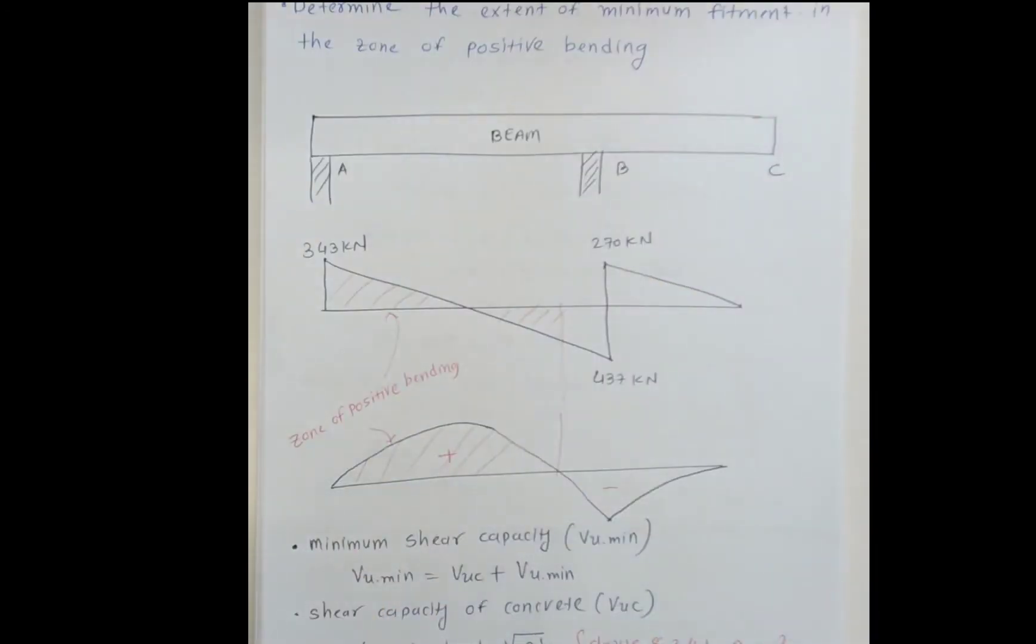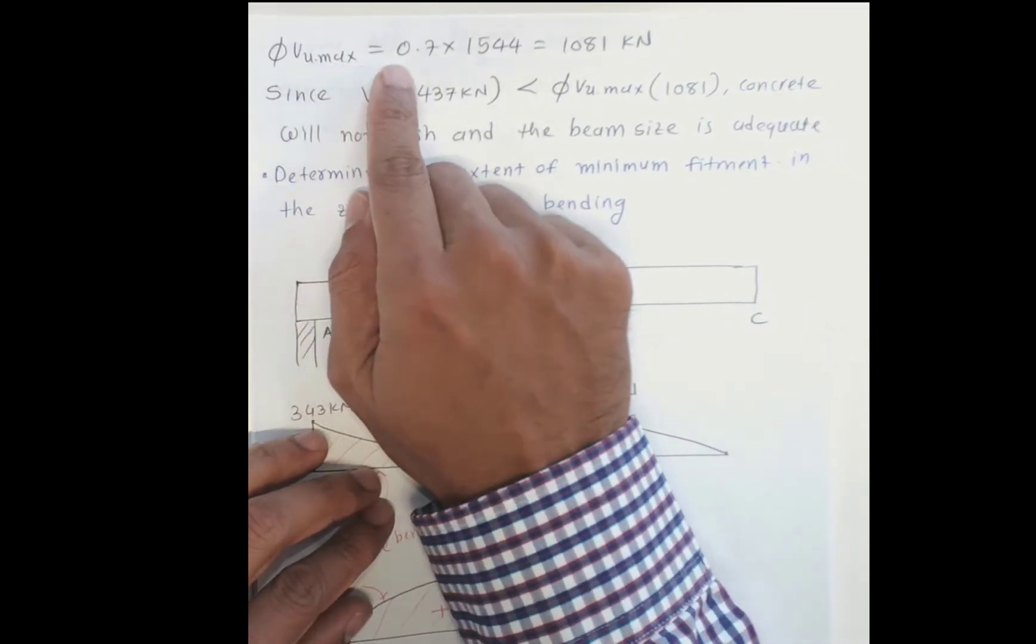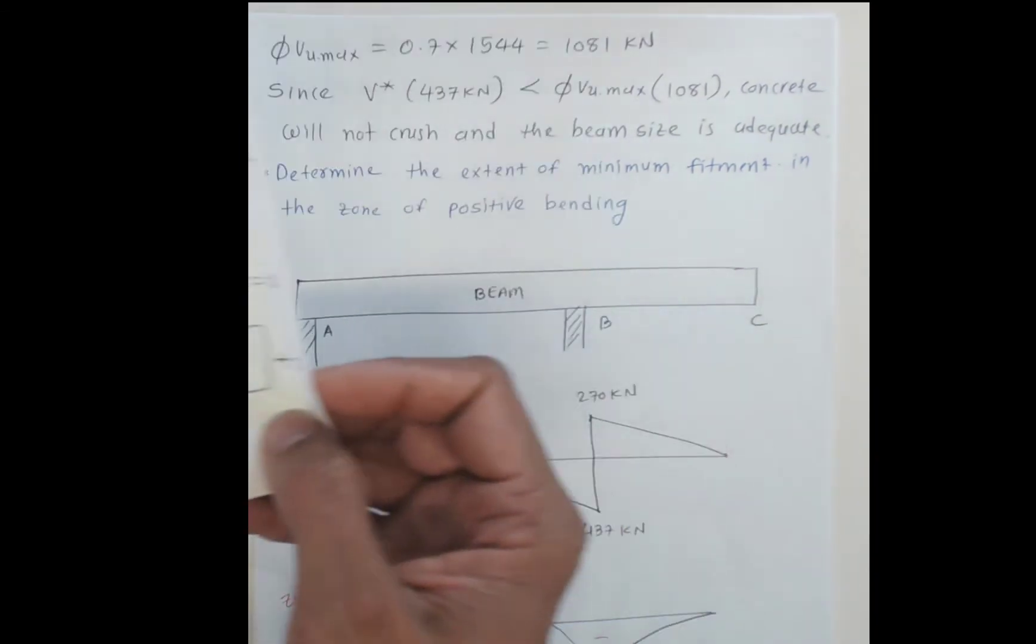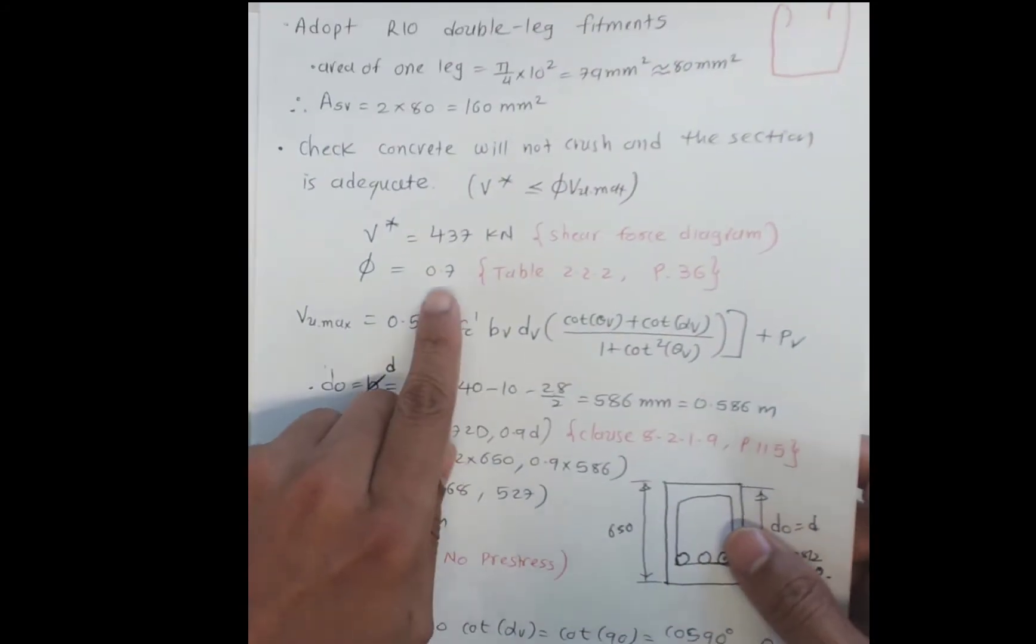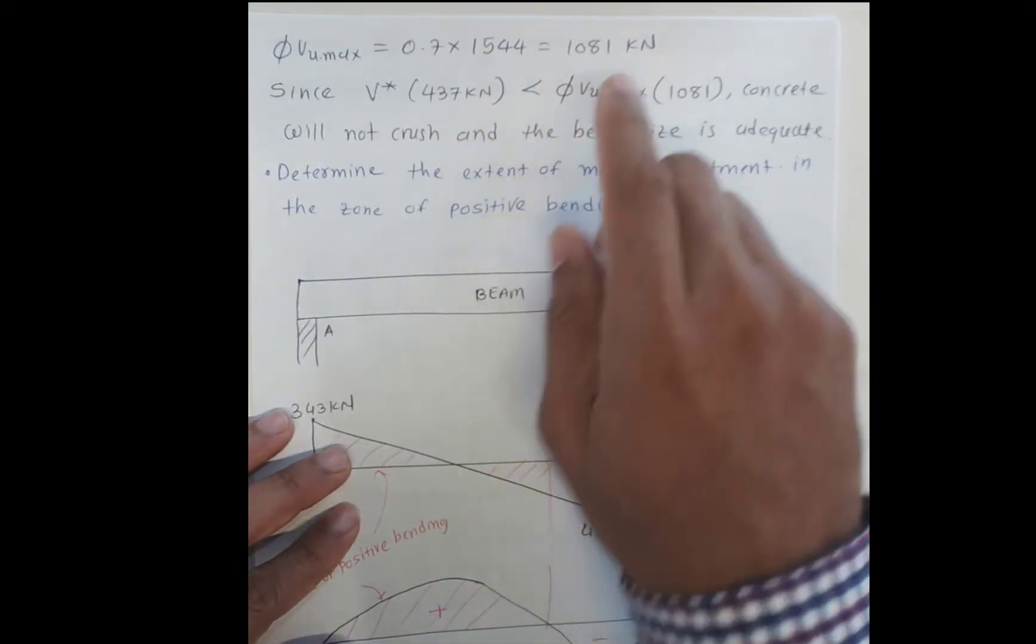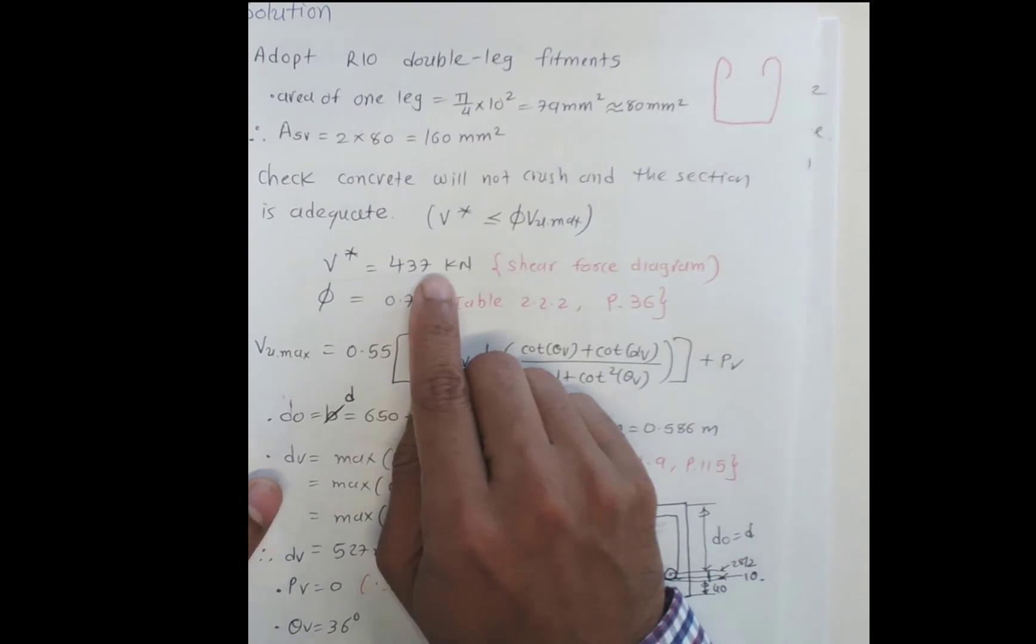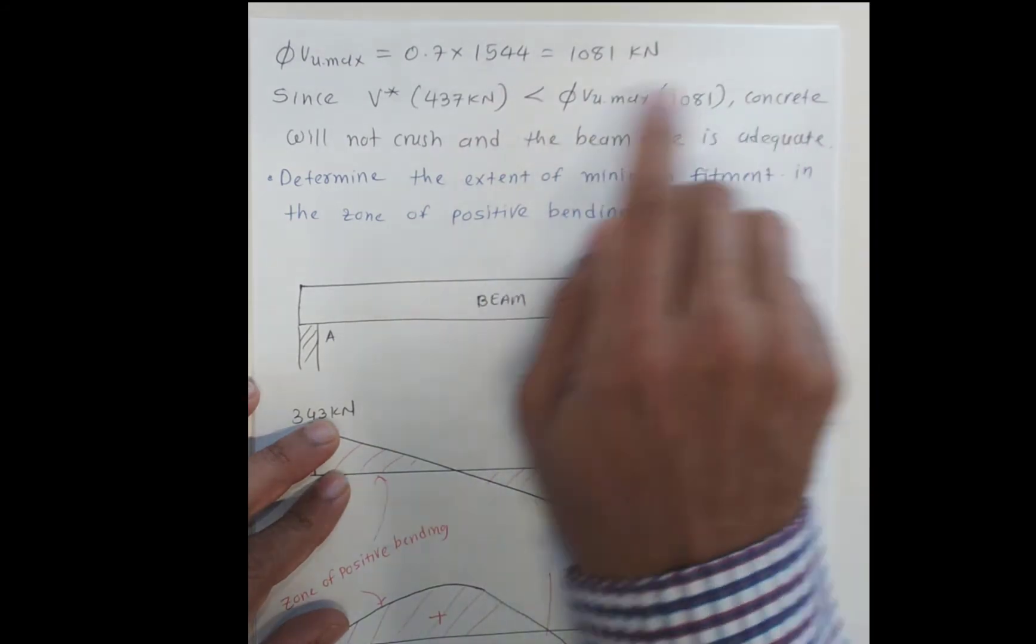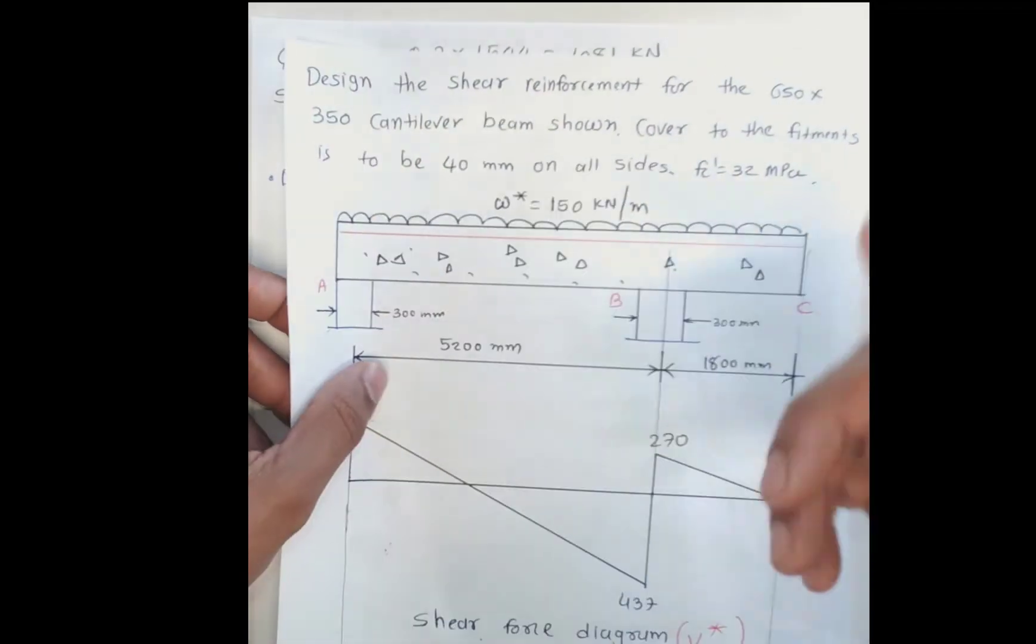Now we calculate φVU maximum. We have 0.7 times the calculated value of 1544 kN times the capacity factor 0.7, which we noted from Table 2.2.2. This gives us 1081 kN. Now we compare: V* which we predicted is 437 kN, which is less than φVU maximum of 1081 kN. So the concrete will not crush, and the beam size of 650 by 350mm is adequate.